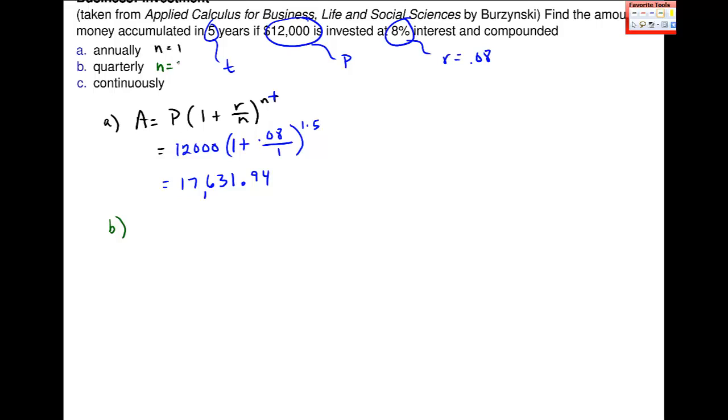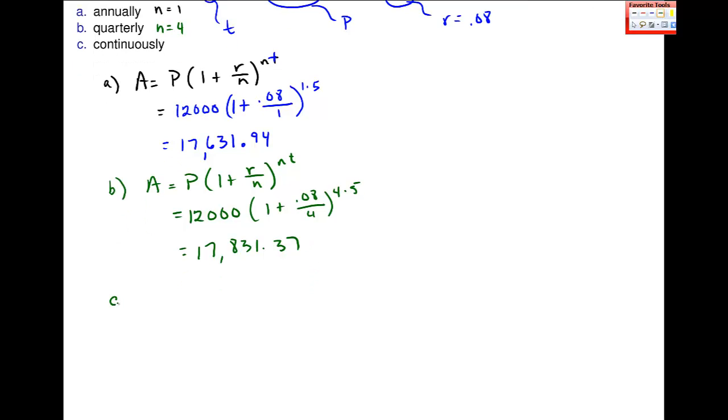B is quarterly, which means N is equal to 4, otherwise this is the exact same as problem part A. And I get, when I plug that in, 17,831.37. You can see that if the bank will compound interest more frequently, it's better for you. You make more money.